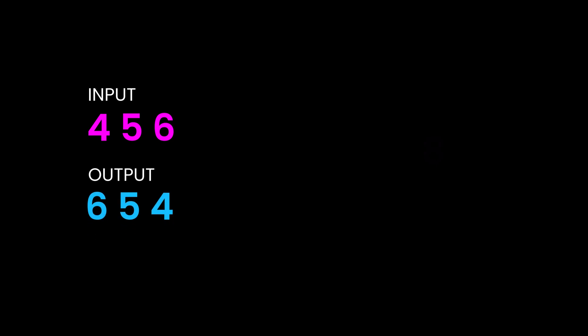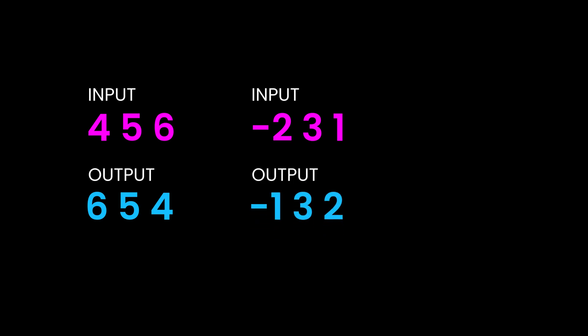If we're given the integer 456 and we were to reverse it, the reverse of that number would be 654. If we're given a negative integer like negative 231, we take the negative sign first and then reverse the digits after it, giving us negative 132. Finally, if we're given a single digit or all digits are the same, we simply output the same number — so if given 8, the output is also 8.